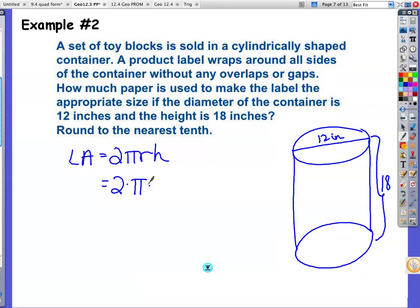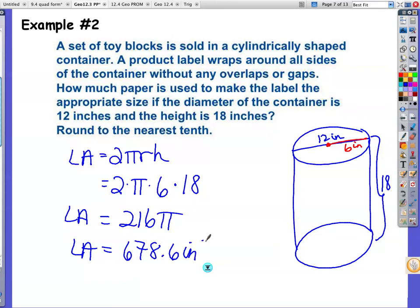We're going to use lateral area equals 2 pi RH, 2 pi. The radius is not 12. The radius is 6 inches. So we don't want to forget that. So we have 6 for the radius and the height is 18. We're going to take 2 times 6 times 18. And that comes out to be 216 pi. So if your answer had to be left in terms of pi, that's what you do. But this book does not do that. So we're going to stick with the book. And your answer should be 678.6 inches squared.